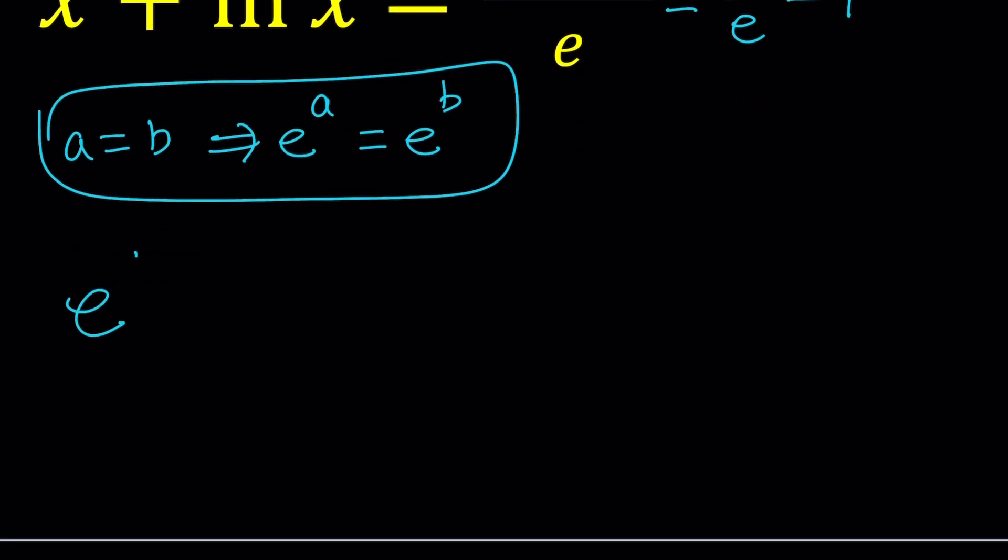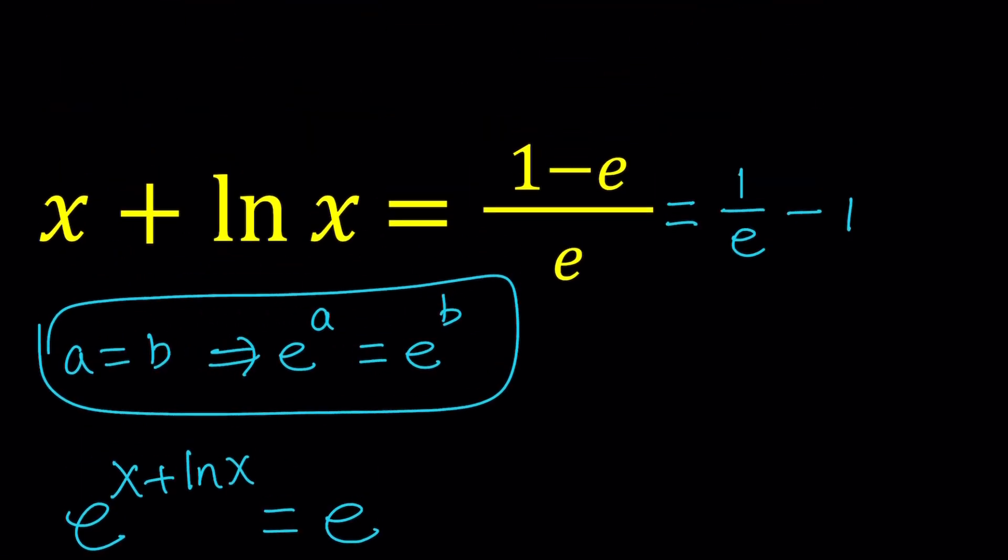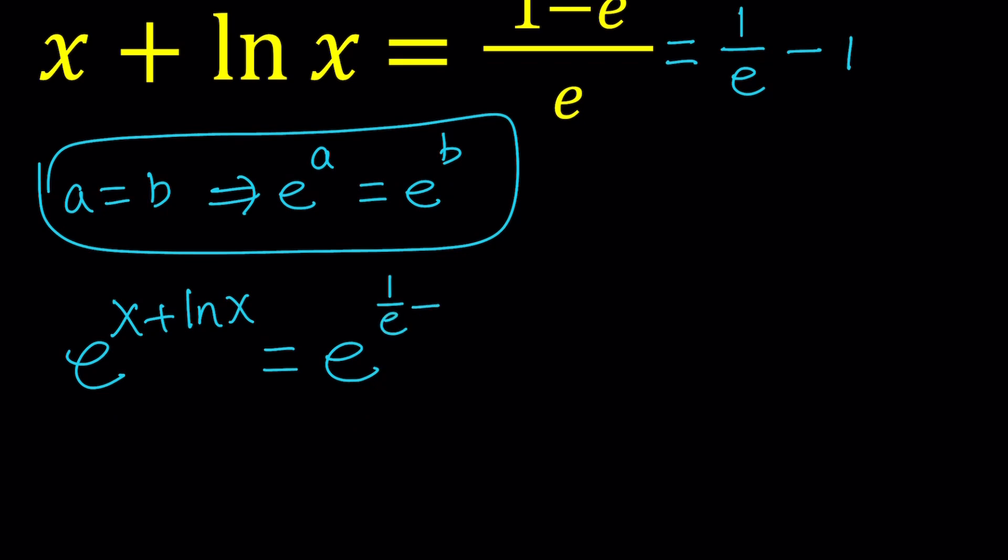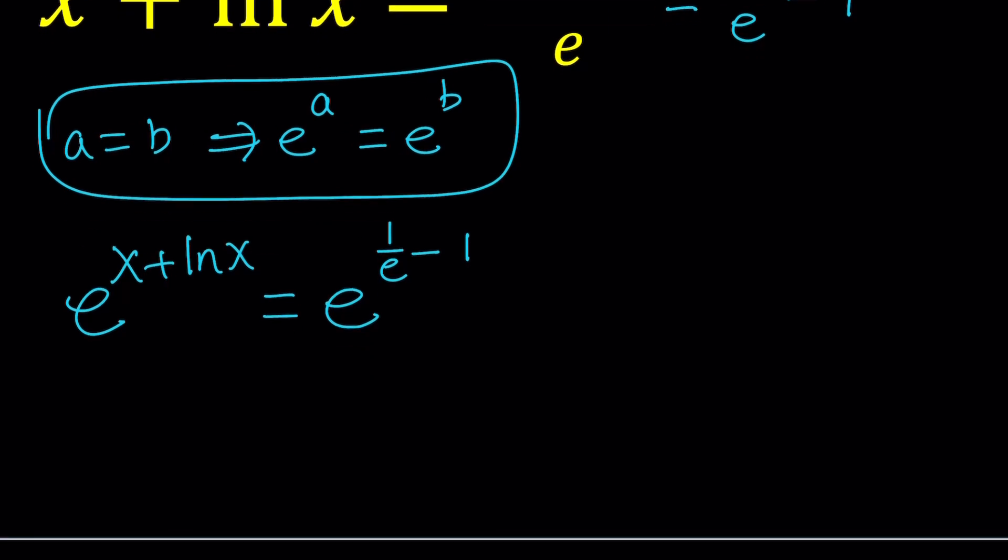Let's do it. e to the power of (x plus ln x) equals e to the power (1 over e minus 1). I wanted to separate those two things because I'm going to use the laws of exponents or properties of exponents or rules. And this is how it works. When you have a to the power (m plus n), you can write it as a to the power m times a to the power n. When you have a to the power (m minus n), you can write it as a to the m divided by a to the n.